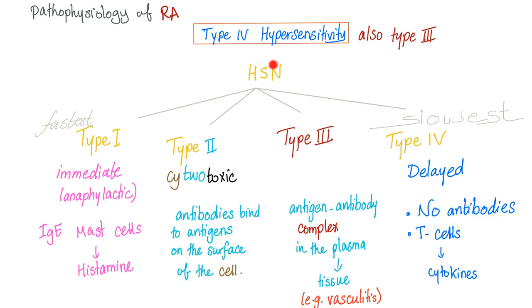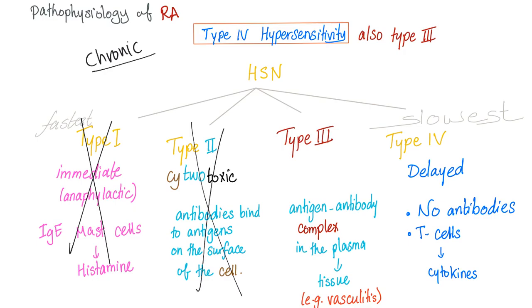Pathophysiology of rheumatoid — what type of hypersensitivity reaction is it? Type 4 and also type 3. Remember, rheumatoid is a chronic disease — it's delayed, not immediate. It takes time for T cells to attack. Type 3 also applies because we have immune complexes causing immune complex-induced vasculitis, as seen in both lupus and rheumatoid.